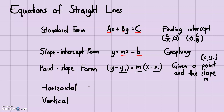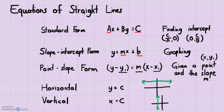The horizontal line is when y equals some constant, and the vertical line is when x equals some constant. If y equals a constant, it will be a horizontal line at that value on the y-axis. If x equals a constant, it will be a vertical line at that value on the x-axis. When only one variable is present, it's either a horizontal or vertical line.